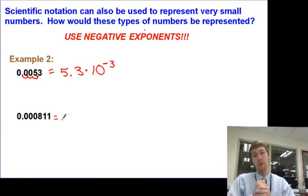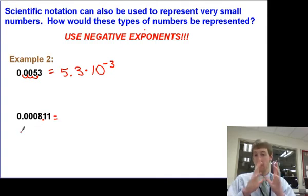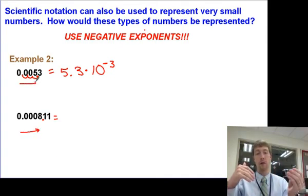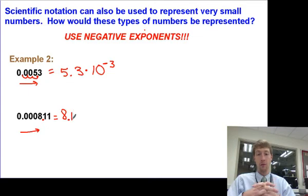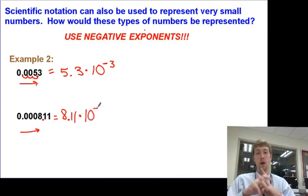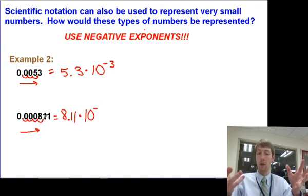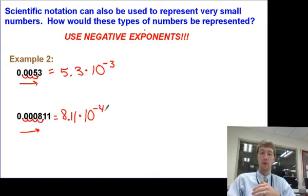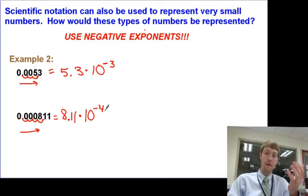Looking at the next example: I'm going to move my decimal to get 8.11, because that's between 1 and 10. All I have to do is figure out what my power of 10 is. I know it's going to be negative because I've got a small number, and I move it four times — so it's 8.11 times 10 to the negative 4.